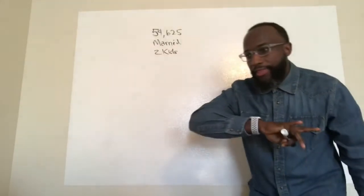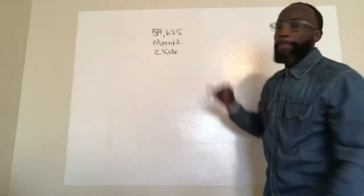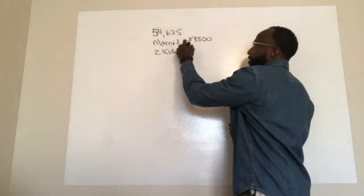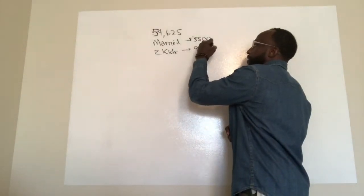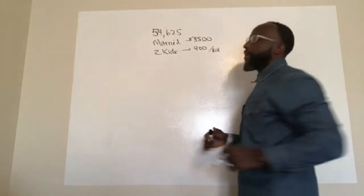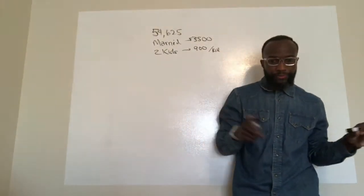So with that being said, there is a personal exemption for being married. For being married there is a $3,500 personal exemption, and there is a $900 personal exemption per kid. In this example here.